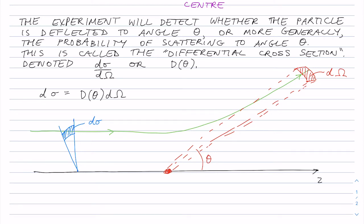So you can write something like this. And that's where the notation d sigma d omega comes from. But it's not really a differential.